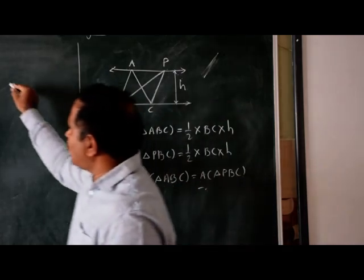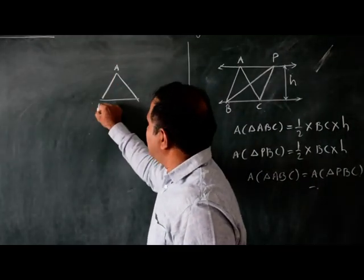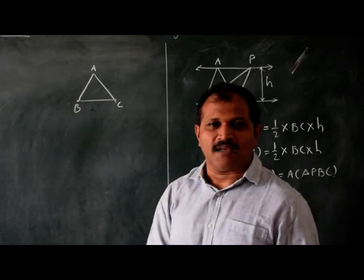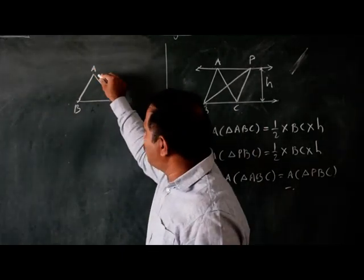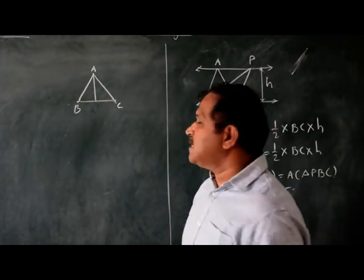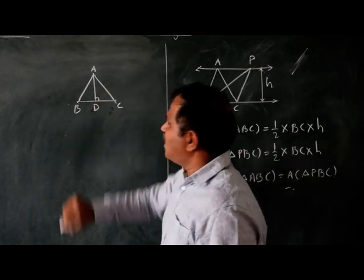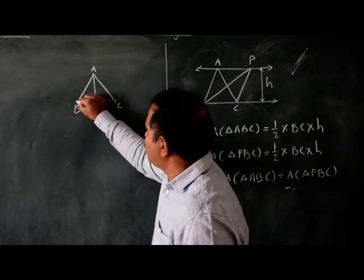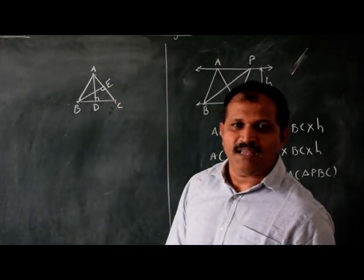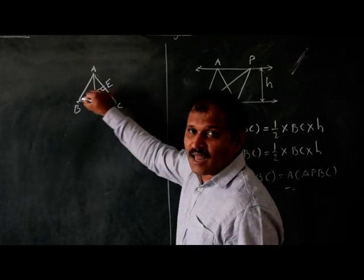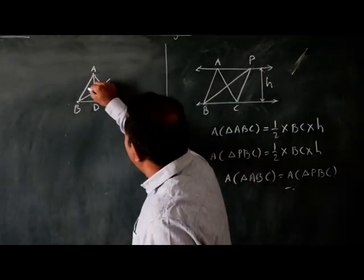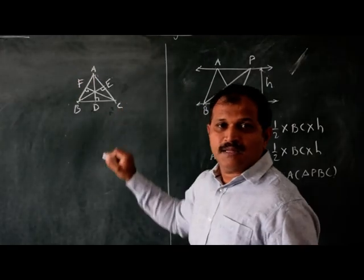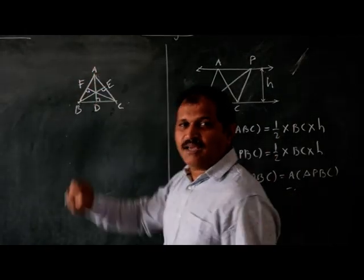Second thing: if we draw triangle ABC, we can draw three altitudes to any triangle. If we draw a perpendicular from vertex A to side BC, say AD, then BC is the base and AD is the altitude. Similarly, if we draw perpendicular BE to AC, then AC is the base and BE is the height. And if we draw perpendicular CF to AB, then CF is the height and AB is the base.